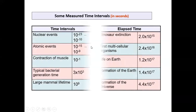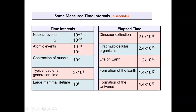Looking at some measured time intervals: nuclear events occur in very short durations on the order of 10⁻²³ to 10⁻¹⁰ seconds — these are nuclear decays and radiation emissions. Atomic events are on the order of 10⁻¹⁵ to 10⁻⁹ seconds. Contraction of muscles happens in about one tenth of a second, and typical bacterial generation time is about 3 × 10³ seconds.